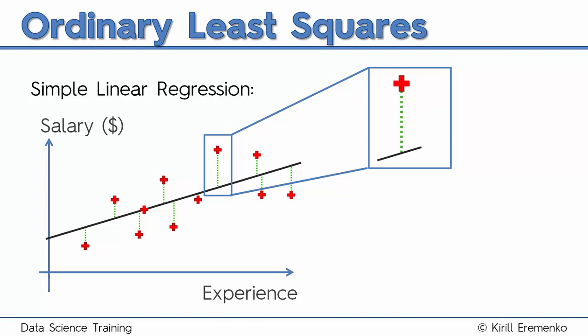According to the model, it should be a bit lower, somewhere where that green cross is, which is about $80,000.